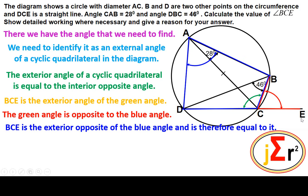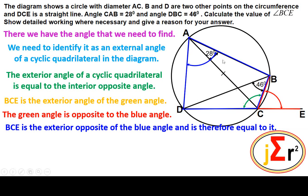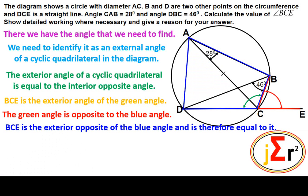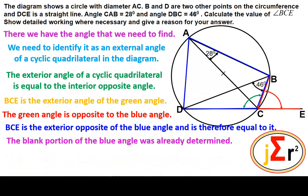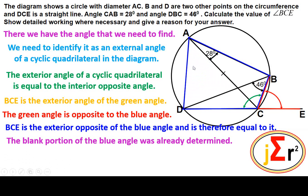We need to identify the interior angle that is opposite to BCE. First, BCE is identified as an exterior angle; then it is shown to be external to the green angle, which is opposite to the blue angle. Therefore BCE, the angle we are finding, is the exterior opposite to the blue angle, and they are equal. The interior angle of a cyclic quadrilateral equals its exterior opposite.